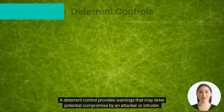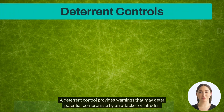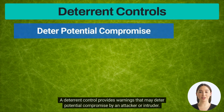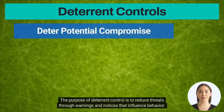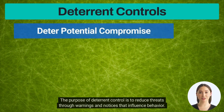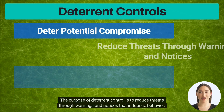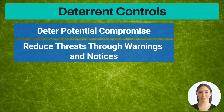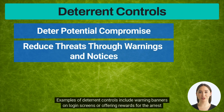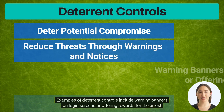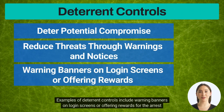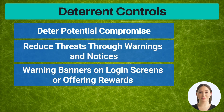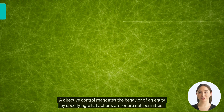A deterrent control provides warnings that may deter potential compromise by an attacker or intruder. The purpose of a deterrent control is to reduce threats through warnings and notices that influence behavior. Examples of deterrent controls include warning banners on login screens or offering rewards for the arrest of hackers.